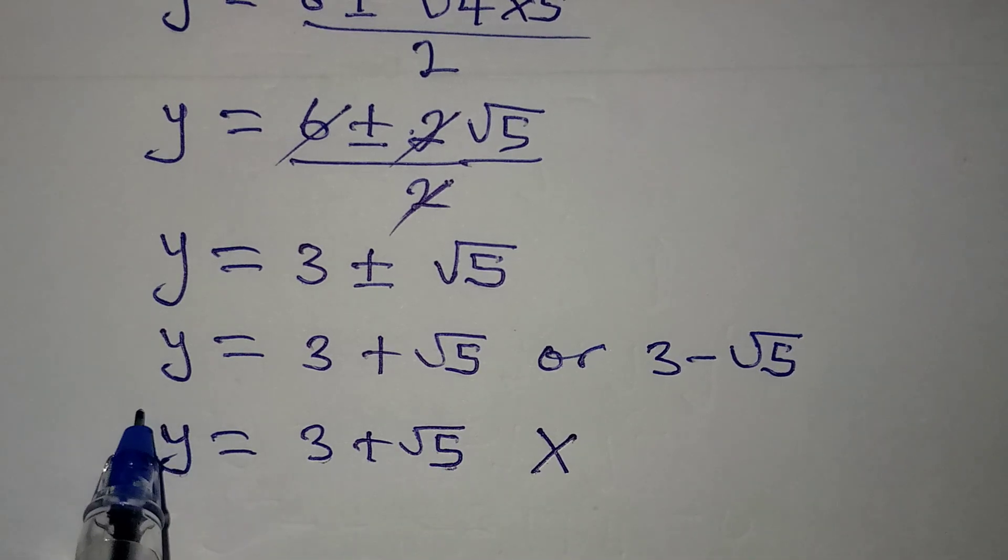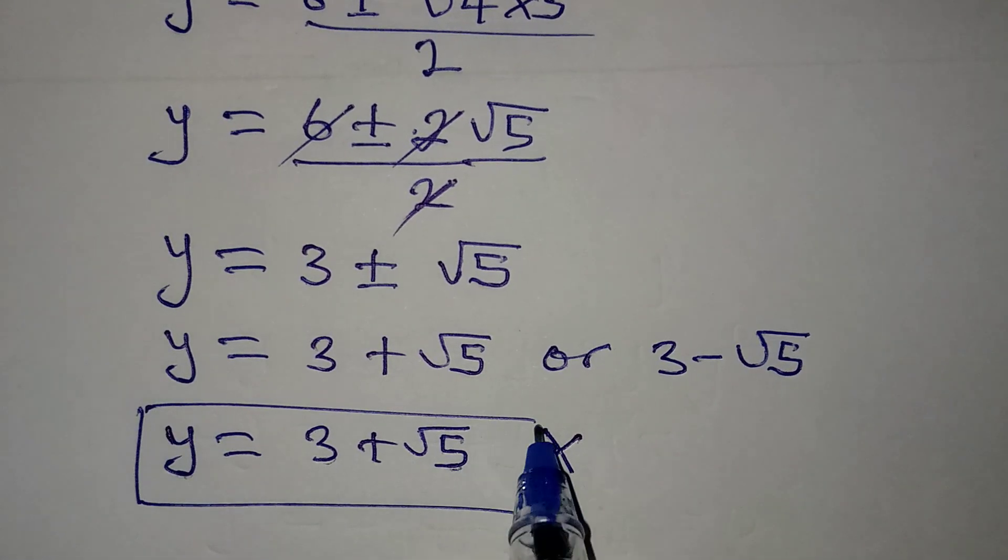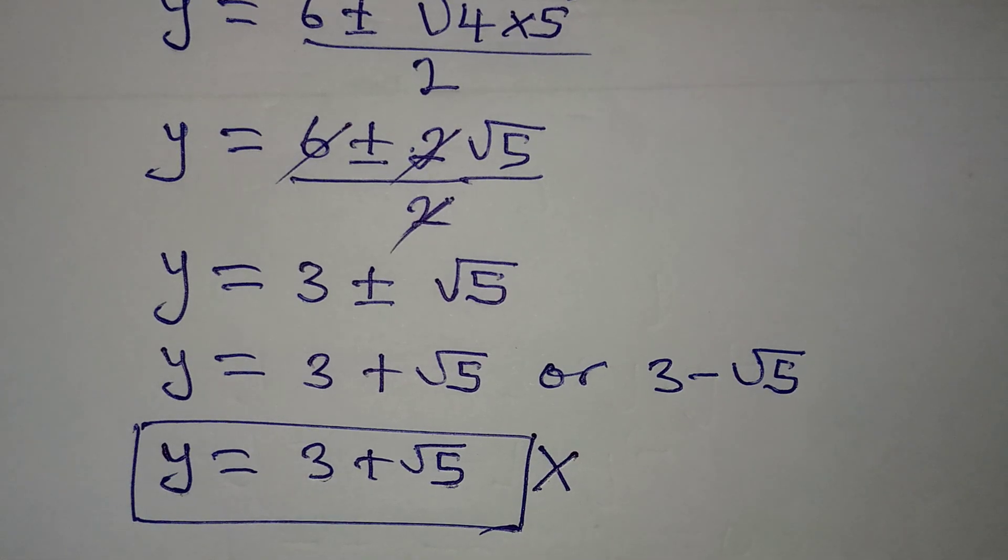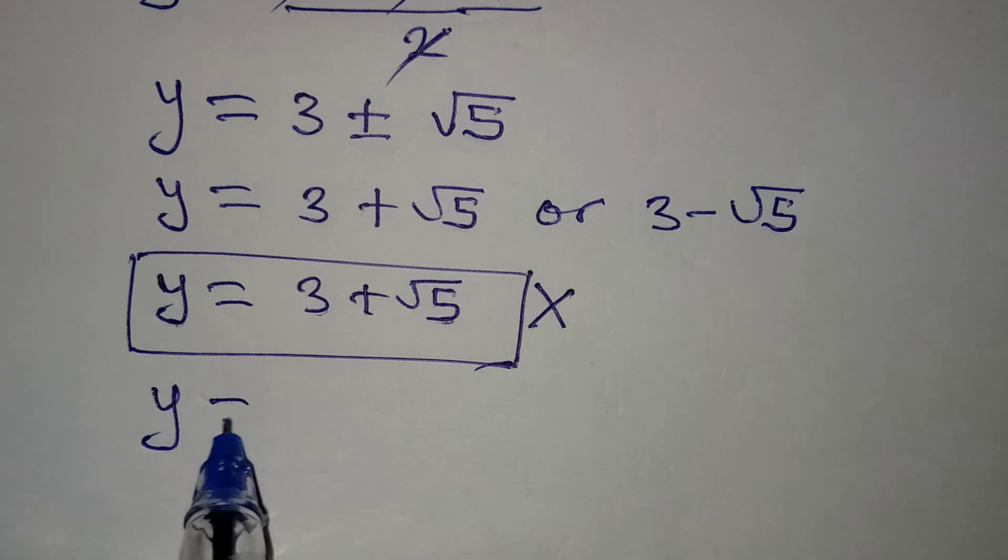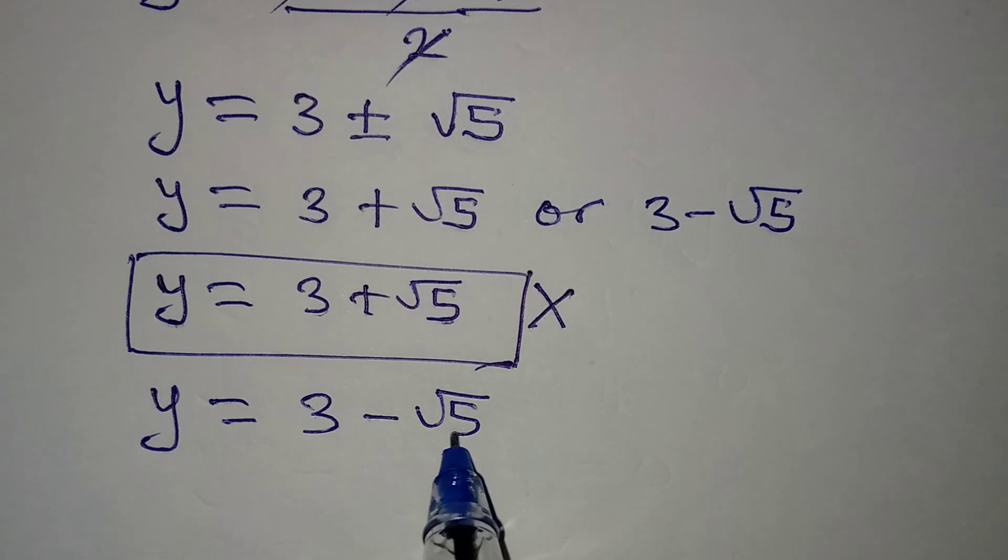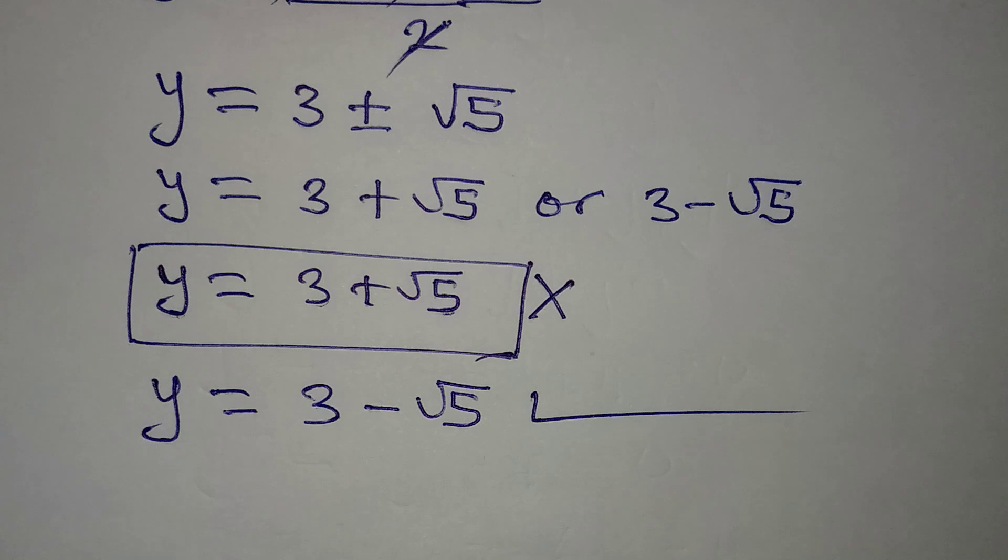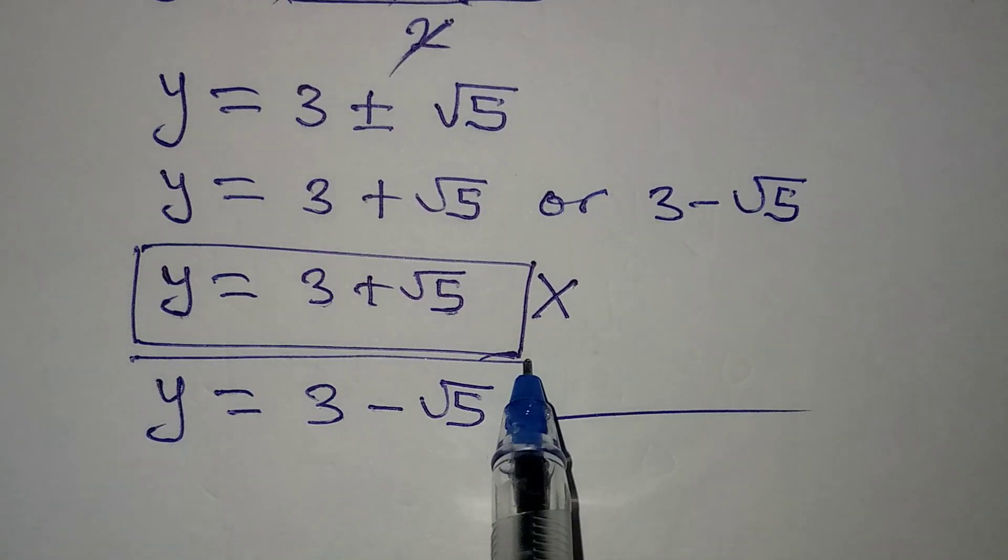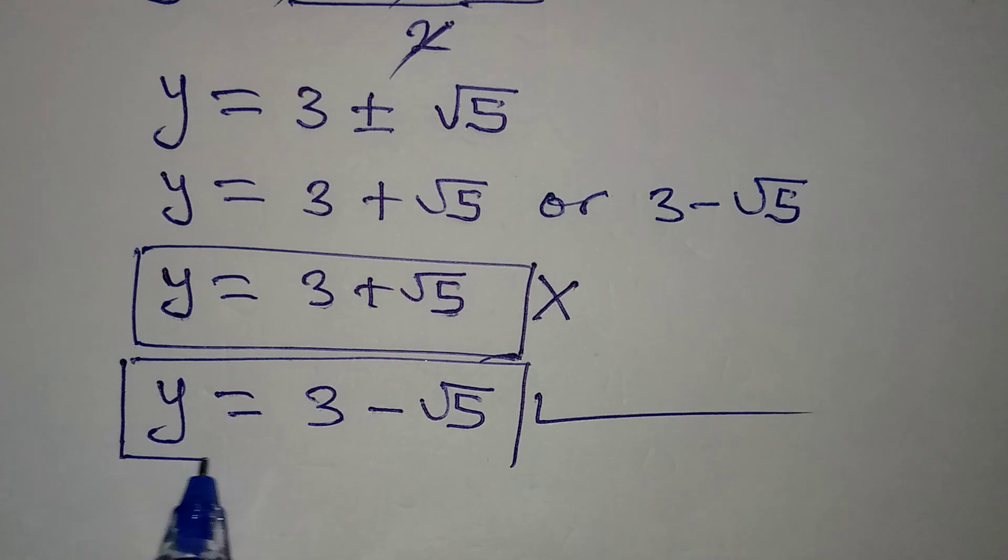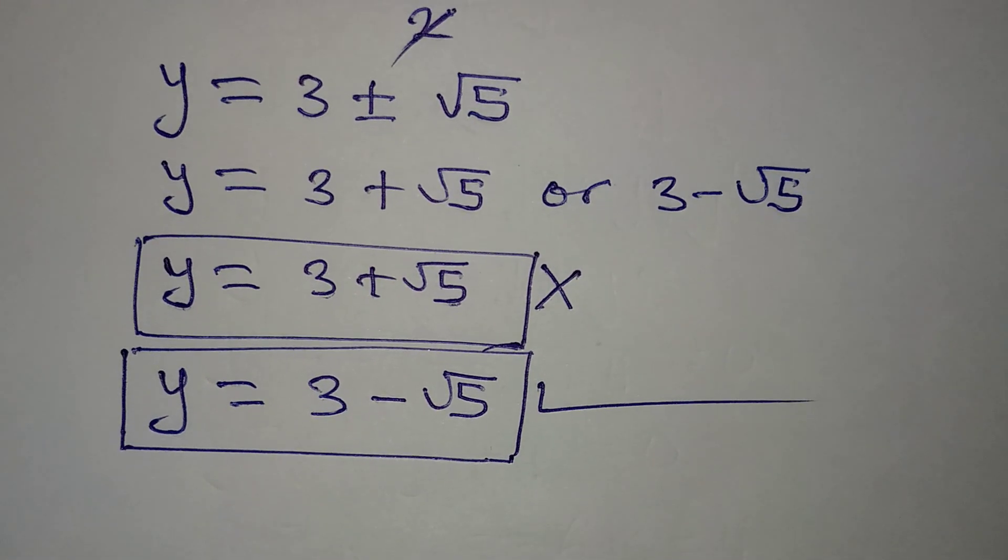So this does not satisfy the equation if you try to check it yourself. But then y to be equal to 3 - √5 satisfies the equation, meaning that this is the only solution to the equation. Thank you for watching.